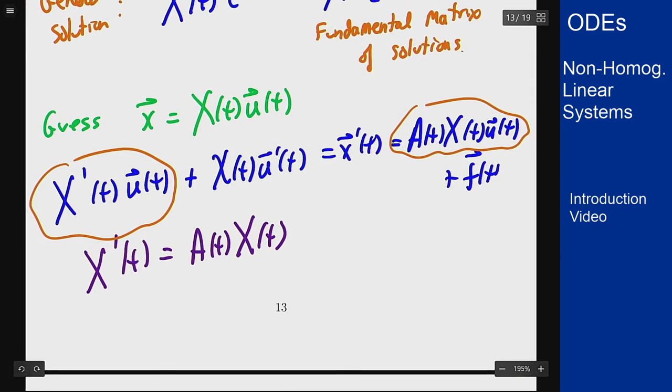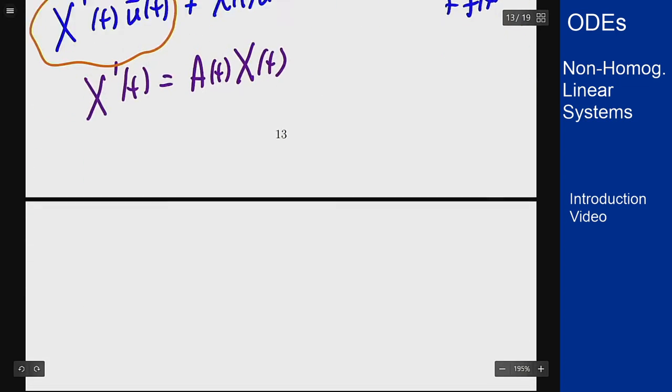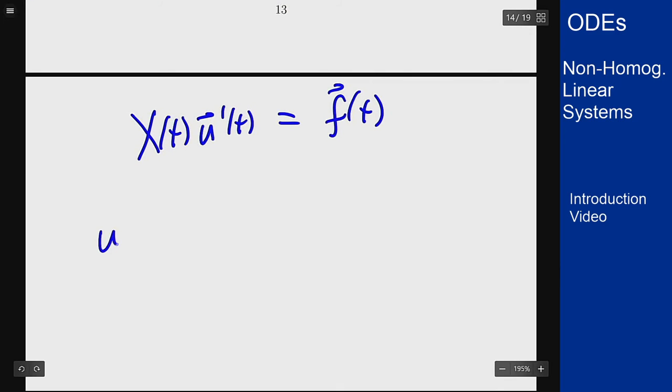So what I am left with then is that to make this solve the non-homogeneous problem, I want X(t)*u'(t) to equal the vector f(t). Now since X(t) is a fundamental matrix it is invertible, which means then that u'(t) will equal X(t)^(-1) times f(t) which is a vector I can solve for.